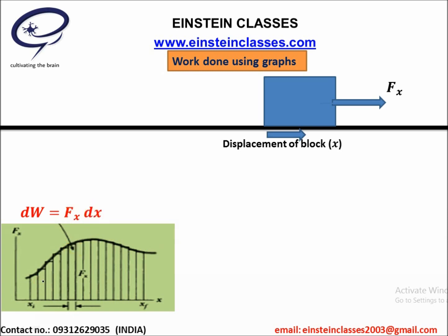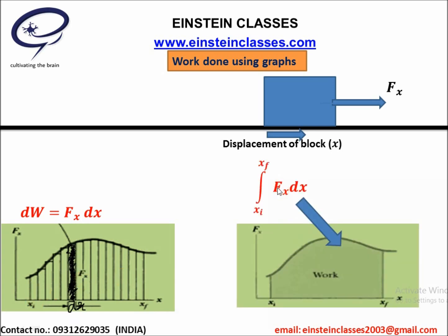This graph is divided into several very small rectangular parts. Consider one rectangular part. The thickness of this rectangle is dx and the height of this rectangle is fx. The area of the rectangle is height fx into thickness dx. Hence, the work done is nothing but the area of this rectangular part. The work done by the force fx from position xi to position xf can be determined by using the complete area under the graph, and that area will represent the work done.